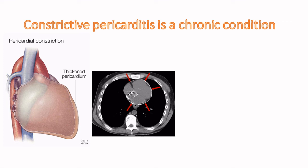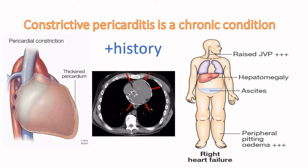Another condition people mix up with cardiac tamponade is constrictive pericarditis — not because they're very similar, but because constrictive pericarditis also causes pulsus paradoxus. Think of constrictive pericarditis as a chronic condition. For the pericardium to become fibrosed and thickened, something progressive is needed — so there's always a positive history: the patient received irradiation, had TB (especially if an immigrant), or had lymphoma before. It presents like chronic right heart failure with dyspnea and edema — very unlike the acute presentation of cardiac tamponade, even if the question mentions pulsus paradoxus.